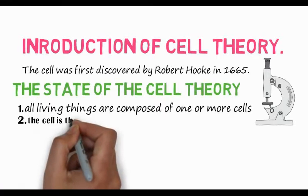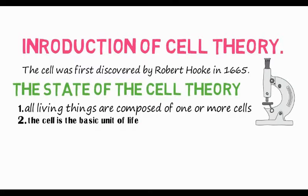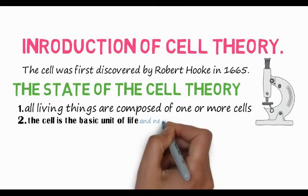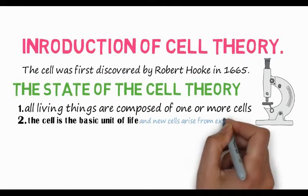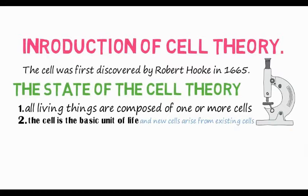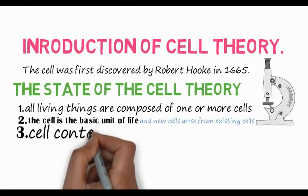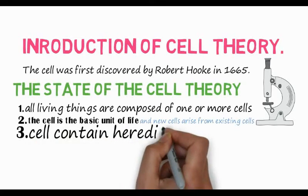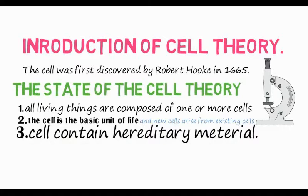Cells arise from another cell by the process of mitosis and meiosis. The cell contains the hereditary material of an organism which is passed from parent to daughter cells. They contain hereditary material including character, mental, and physical traits.